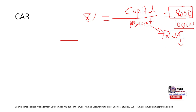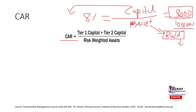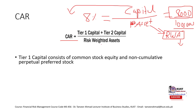Basel I also defined what kind of capital counts. Banks can hold common stock, preferred stock, or other capital, but Basel I divided capital into Tier 1 and Tier 2. The CAR formula becomes: (Tier 1 Capital + Tier 2 Capital) divided by Risk Weighted Assets. Tier 1 capital consists of common stock and non-cumulative preferred stock.